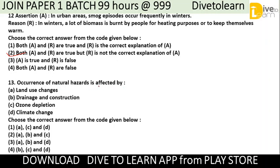Next question: Occurrence of natural hazards is affected by which of the following? Options include (A) land use changes, (B) drainage and construction, (C) ozone depletion, and (D) climate change. We have to choose the correct code. The correct answer is A, B, and D — natural hazards are affected by land use changes, drainage and construction, and climate change.